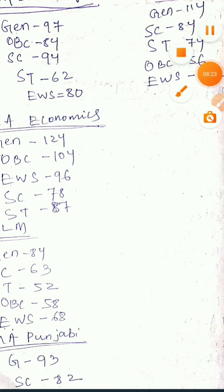Next is MSc Life Science Molecular Medicine. For General the cutoff is 180. Please remember, the total marks are out of 400 — previously it was out of 100, but this year the mark system has changed to 400. So all these cutoffs are out of 400. For OBC it is 174, SC is 145, ST is 148, EWS is 170.